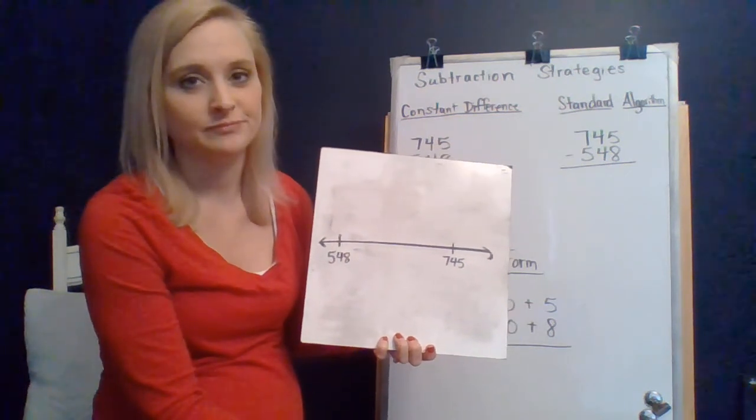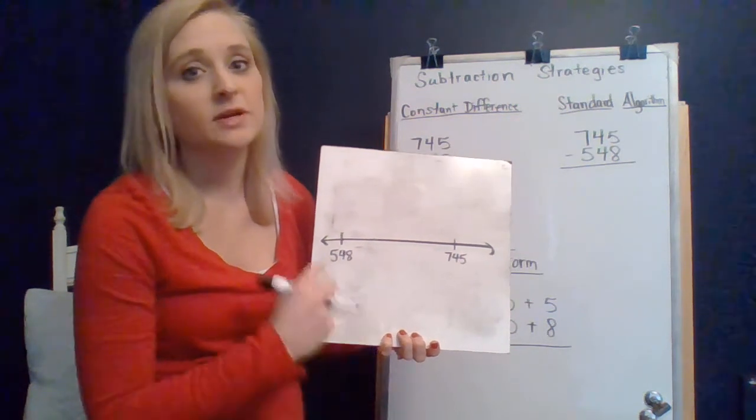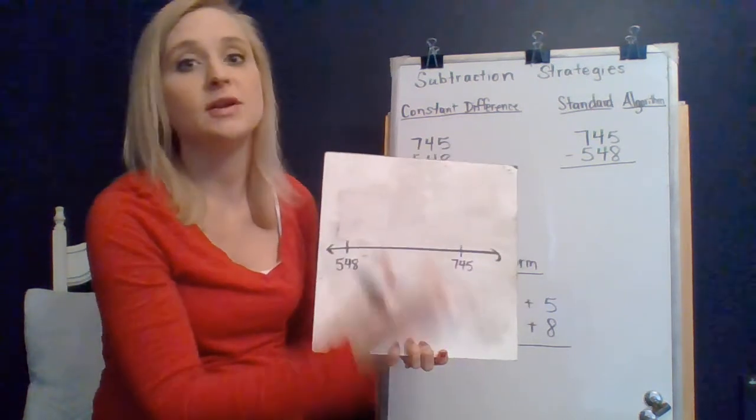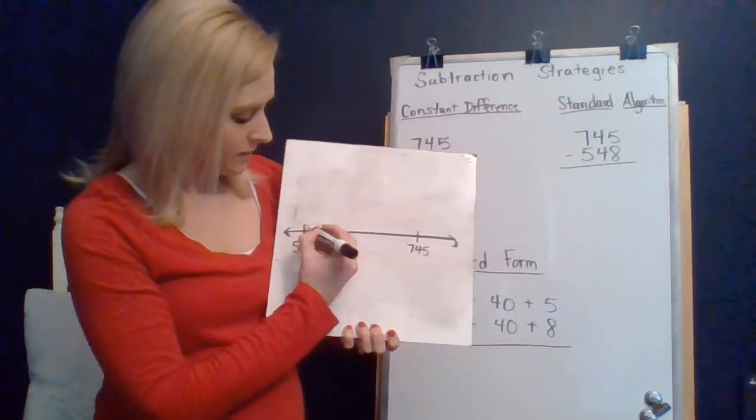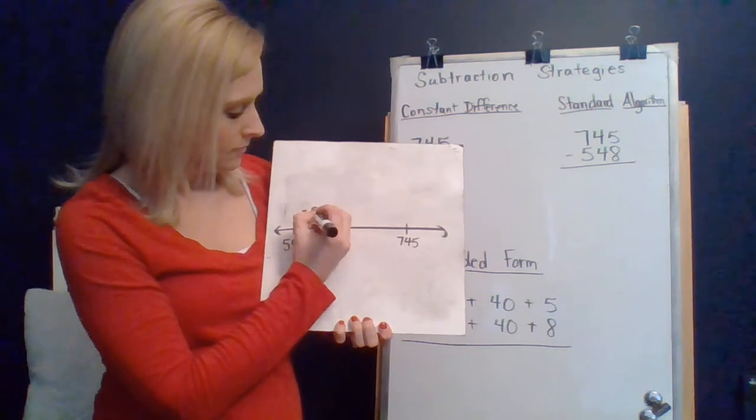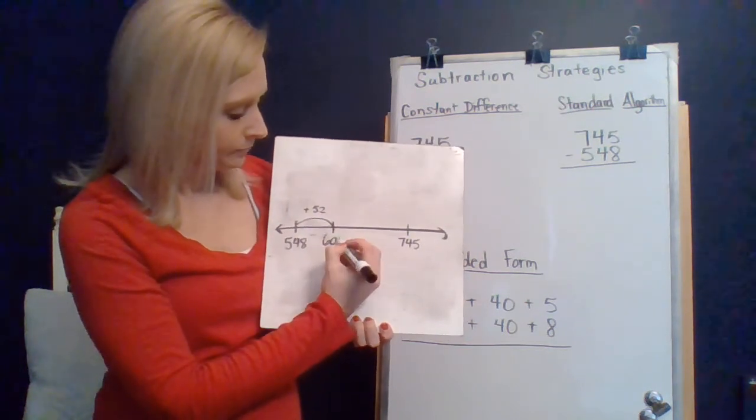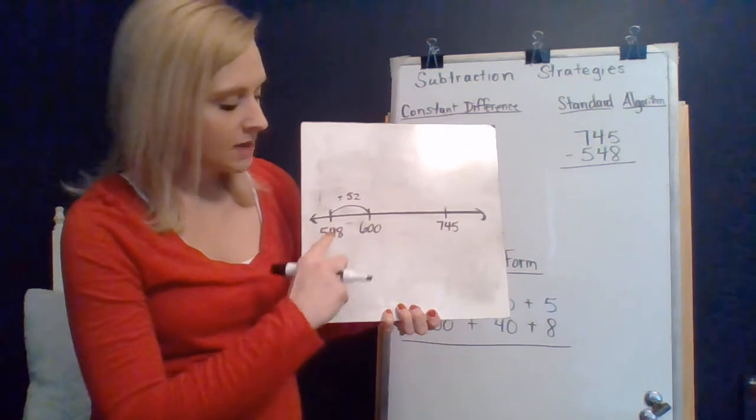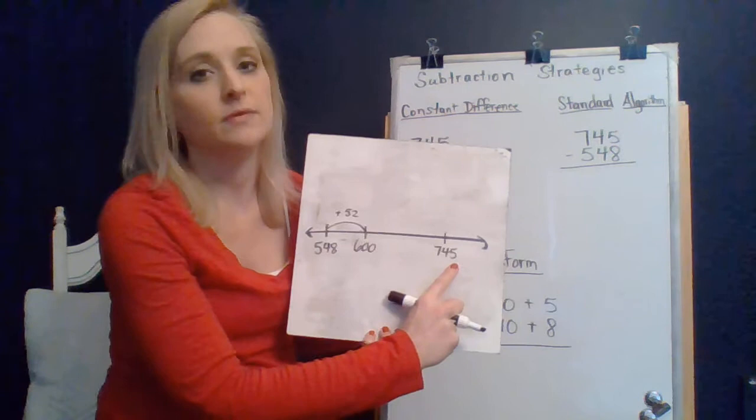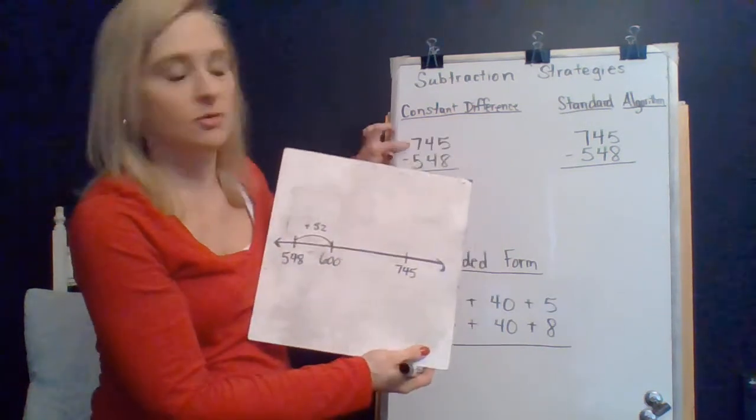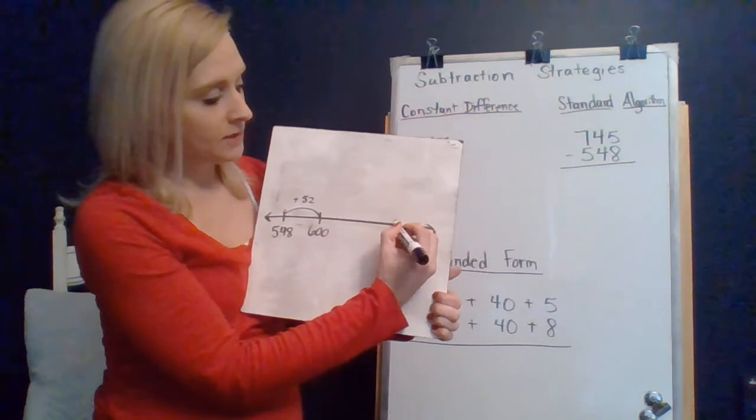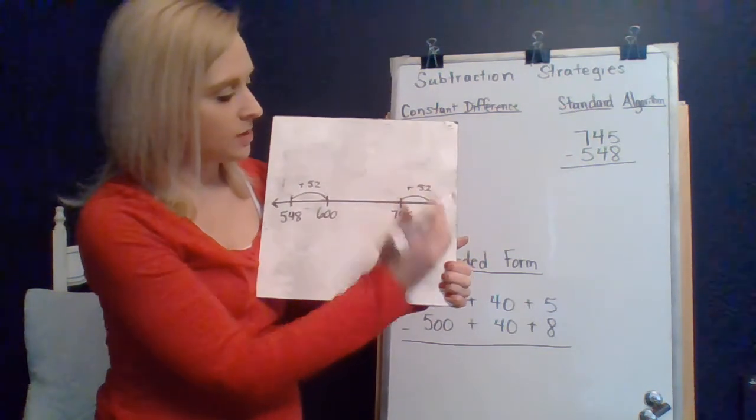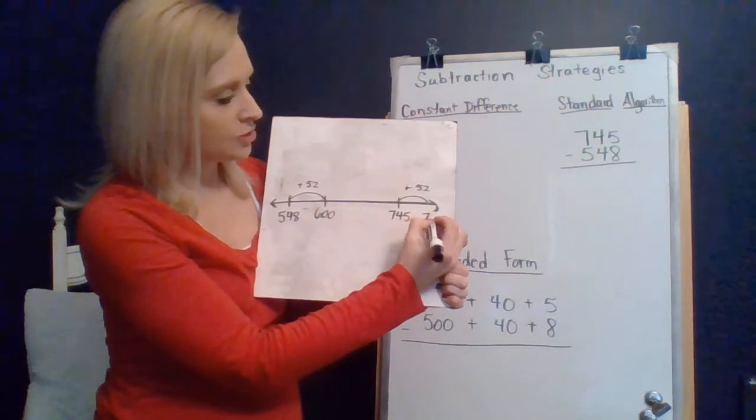So I see if I added two to 548, that would get me to 550. And that's easier, and that's more friendly, but I think I can get this number even friendlier. And so I'm thinking, how can I get 548 to 600? Hopefully, you're thinking, okay, if I add two, that gets me to 550. And if I add 50 to 550, then I get to 600, and 50 and 2 make 52. So if I add 52 to 548, then I get to 600. Well, I want to keep the distance the same, the difference the same on the number line. So if I do that to what I'm removing, I also need to add 52 to what I started with in the original problem. So I need to add 52 to 745.